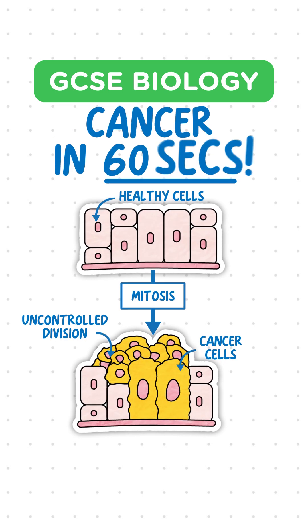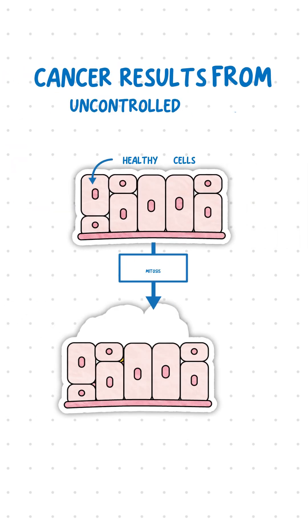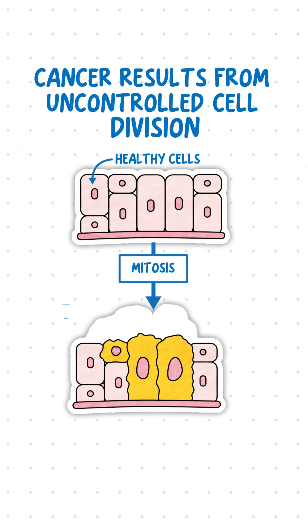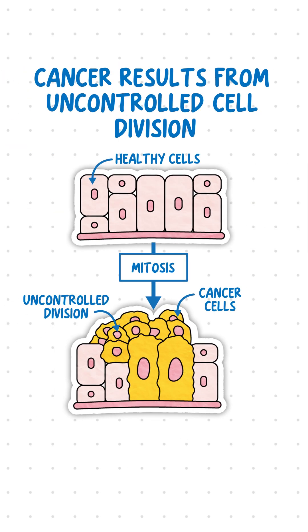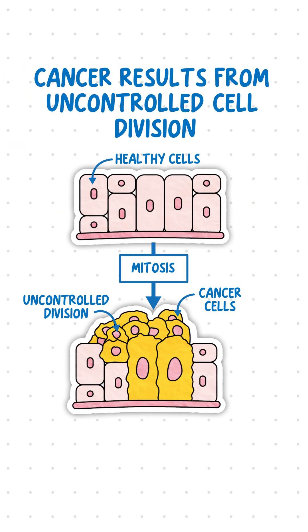Here's cancer in 60 seconds. We're covering everything you need to know for this topic from the AQA specification. Cancer results from uncontrolled cell division by mitosis due to changes in cells.